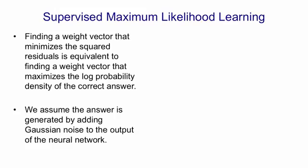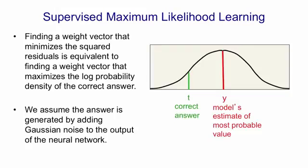The idea is we make a prediction by first running the neural net on the input to get the output, and then adding some Gaussian noise, and then we ask what's the probability that when we do that we get the correct answer. So the model's output is the center of a Gaussian, and what we're interested in is having the target value have high probability under that Gaussian, because the probability of producing the value t, given that the network gives an output of y, is just the probability density of t under a Gaussian centered at y.